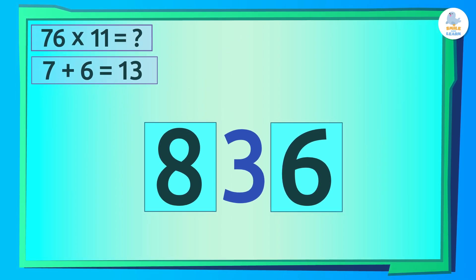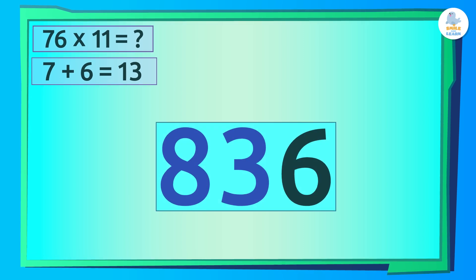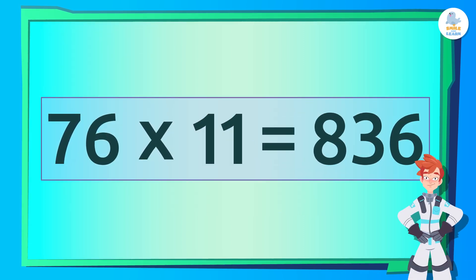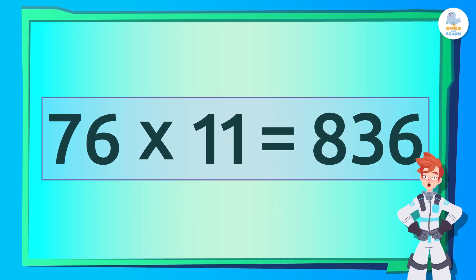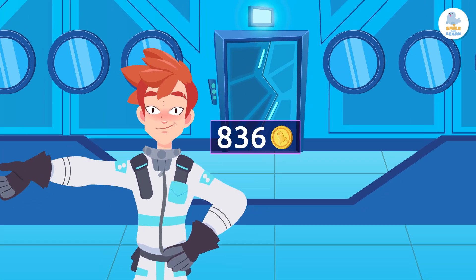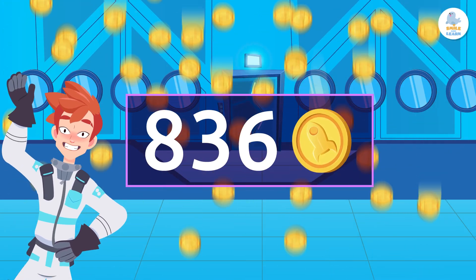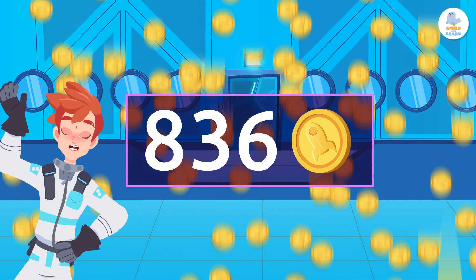In this case, the 7. So, now we know that 76 times 11 is 836! Wow! They're going to be able to buy a great gift with 836 coins!